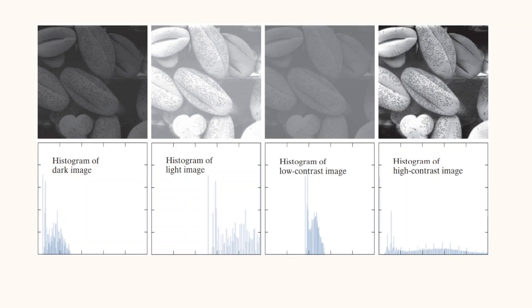In the first image, if you see, it is a dark image. The most populated histogram bins are concentrated on the lower end of the intensity scale. For the second one, that is a lighter image, the most populated bins are biased towards the higher end of the scale. The third image is a low contrast image with a narrow histogram located typically towards the middle of the intensity scale.